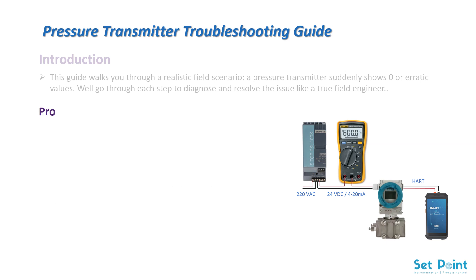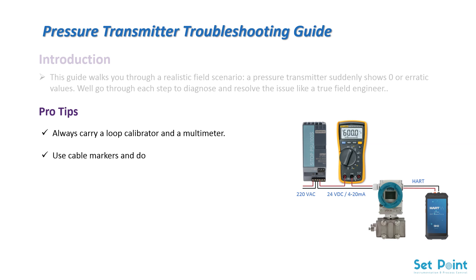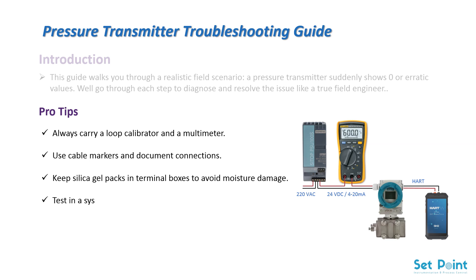Pro tips: Always carry a loop calibrator and a multimeter. Use cable markers and document connections. Keep silica gel packs in terminal boxes to avoid moisture damage. Test in a systematic way — don't skip steps.